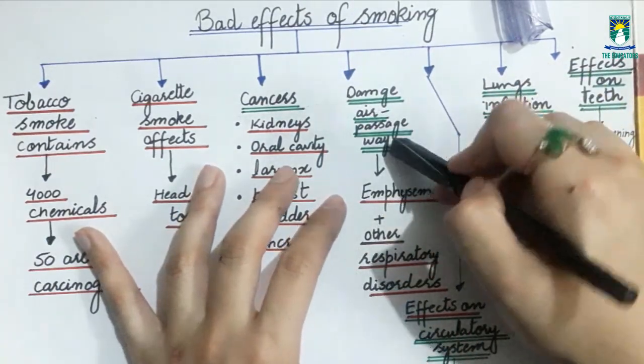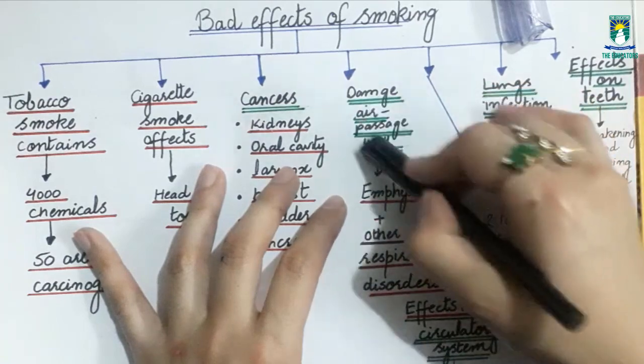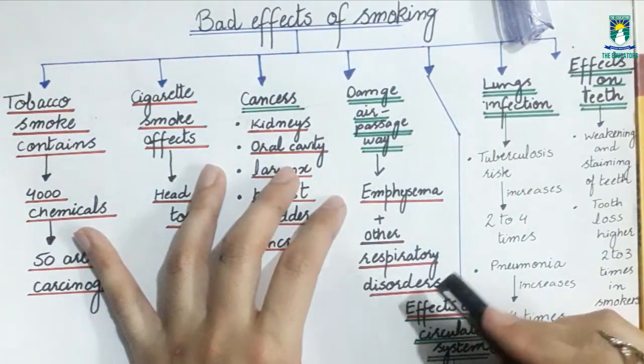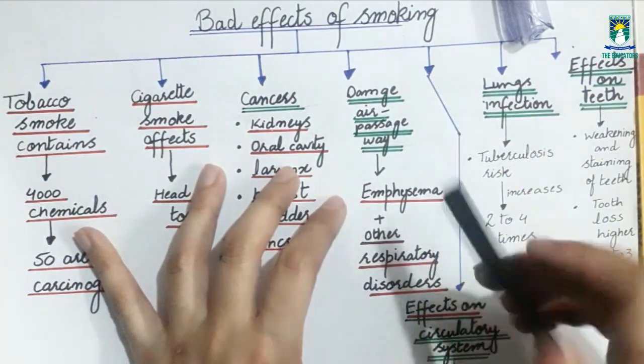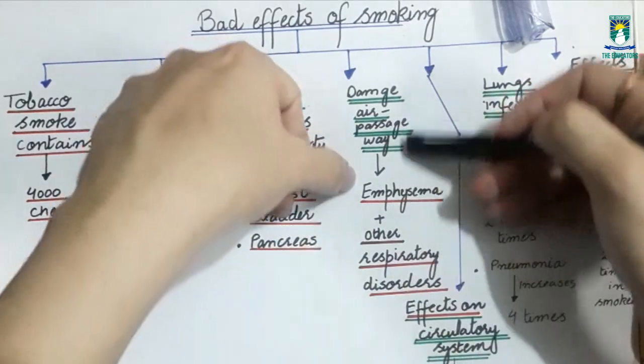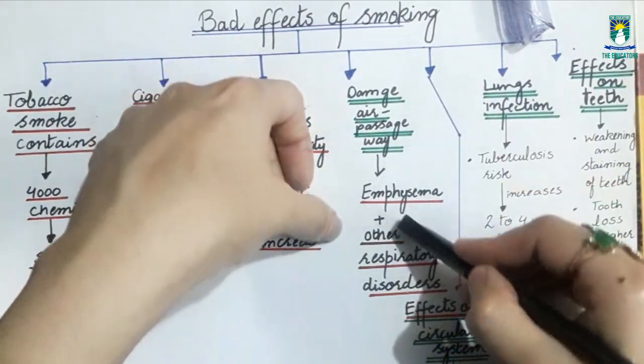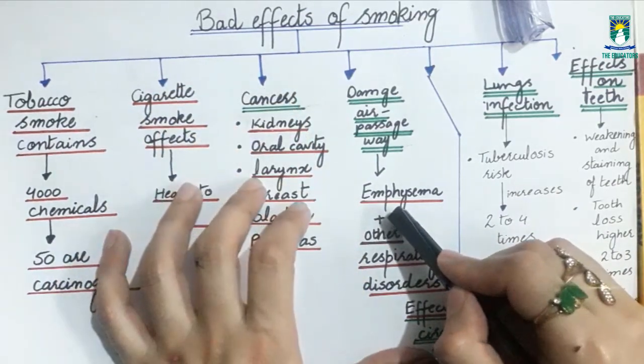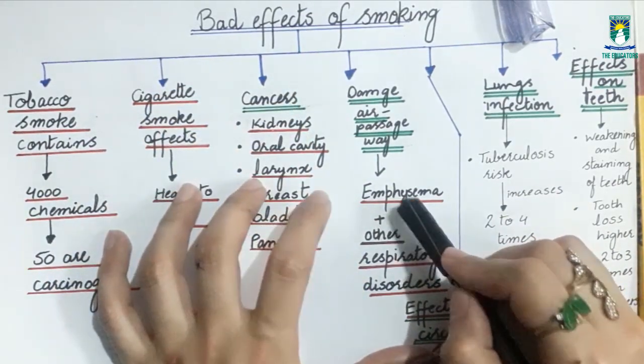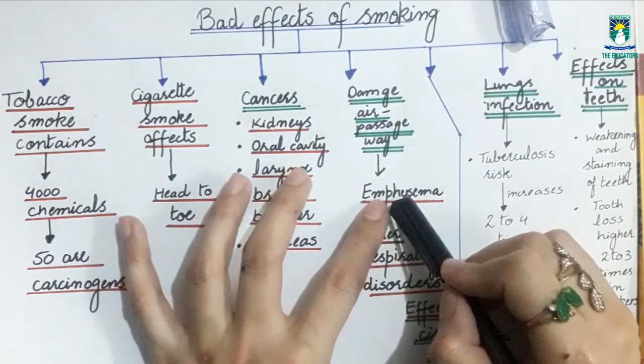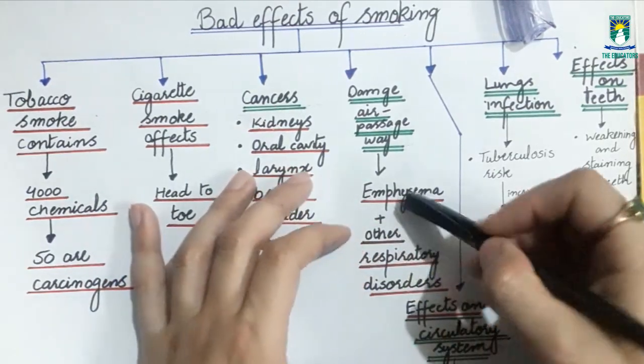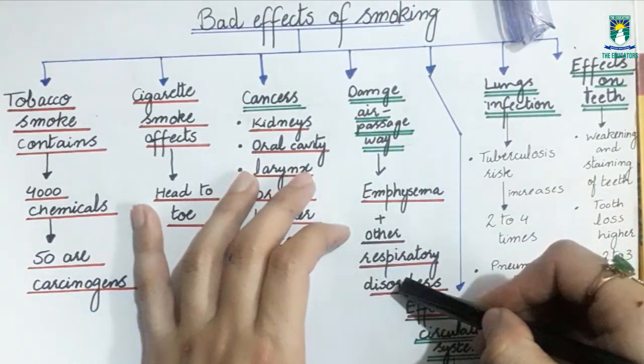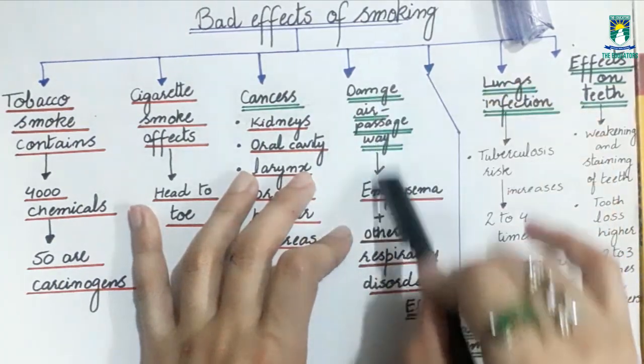Now we will discuss how does smoking effect air passageway. Many chemicals in tobacco smoke damage the air passageway which leads to emphysema. Emphysema is a disease in which there is a destruction of the wall of the alveoli. And your other respiratory disorders are also smoking related.